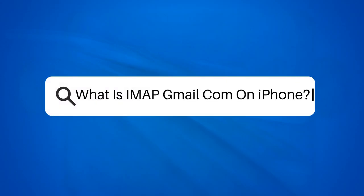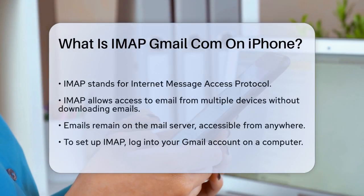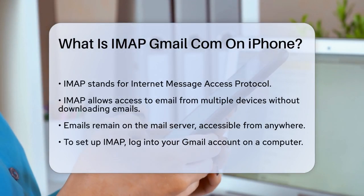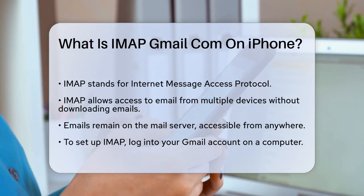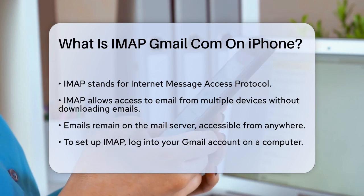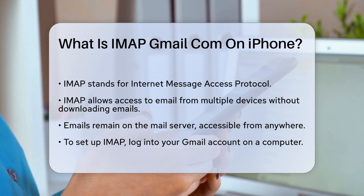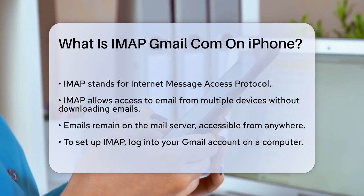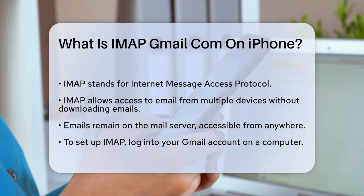What is IMAP Gmail on iPhone? If you're wondering how to keep your Gmail inbox in sync across all your devices, you're probably asking about IMAP Gmail on your iPhone. Let's break it down. IMAP, or Internet Message Access Protocol, is a way to access your email from multiple devices without having to download the emails to each device. This means that your emails stay on the mail server, so you can access them from anywhere.